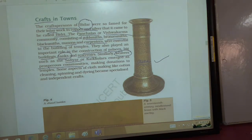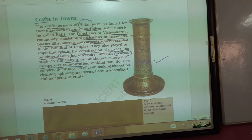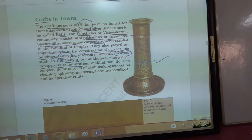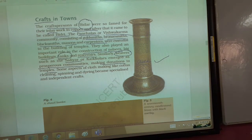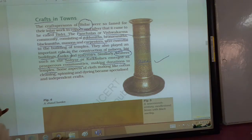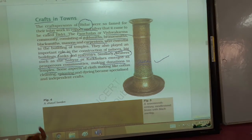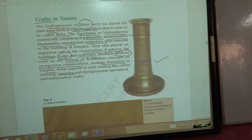They were rich because of the high textile demand in Medieval India. Weavers fulfilled the demand for cloth. Saliyar and Kaikollars were from South India and were very rich. They made donations to temples. The cloth-making process involved cotton cleaning, spinning, and dyeing. These weavers worked in this way and were very wealthy.